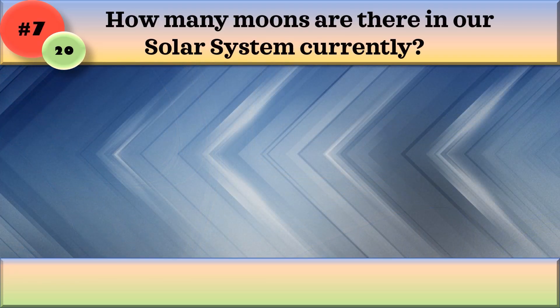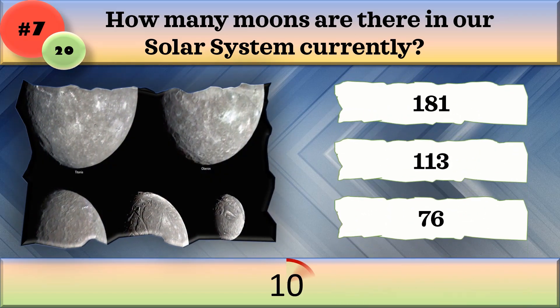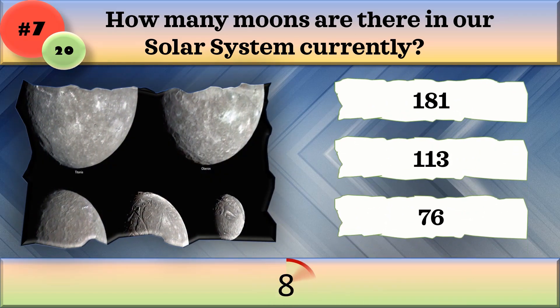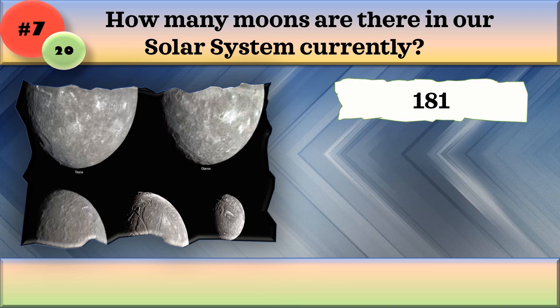How many moons are there in our solar system currently? 181, 113, or 76? 181.